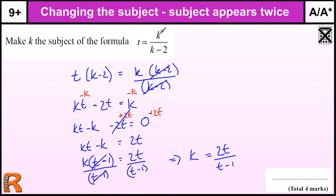Whenever you've got a subject appearing twice, you are going to have to factorise it. The idea is to get all the terms with the subject you want to one side of the equation — it doesn't matter which side — then factorise out that letter, and then divide the rest away. It's a really high-level question, but once you've seen a few of them, hopefully it will get easier.